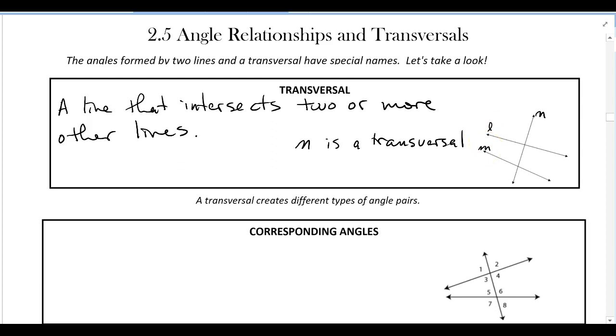One of the things you want to notice here is when I draw a transversal, I create a whole bunch of angles. I create one, two, three, four, five, six, seven, eight - we create eight different angles here. The next videos are going to discuss the relationships between all these different angles.